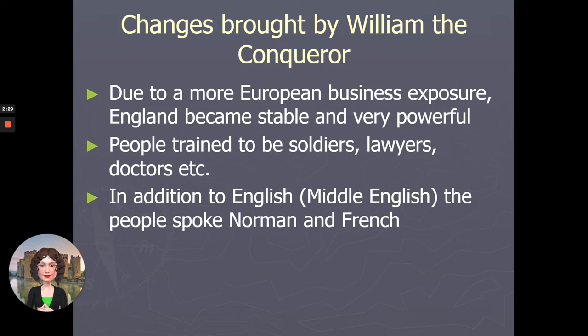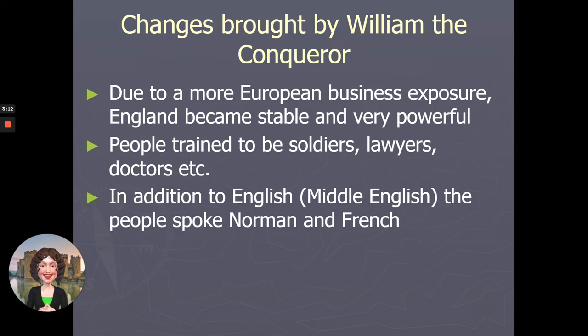In addition to English, people here spoke Norman and French. Languages were still mixing, intermingling, and influencing each other, so English was still very much evolving. The English spoken in this time period is known as Middle English. Unlike Old English in Beowulf, which requires a translation, Middle English is closer to what we speak today, but you still need a translation — the spellings and pronunciations can still be very tricky. We will be reading translated versions of the works of literature.